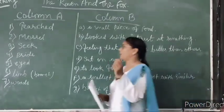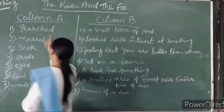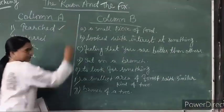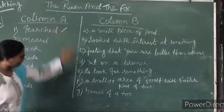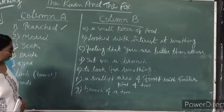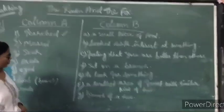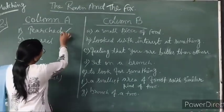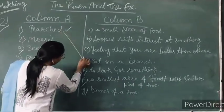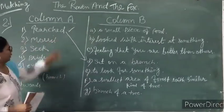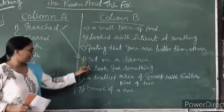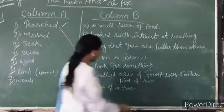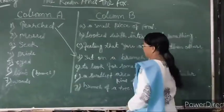So your very first word is perched. Perched means sitting. So you match carefully: sat on a branch. Sat on a branch. Very good. It means it will go to B, sat on a branch. Yes, very good.